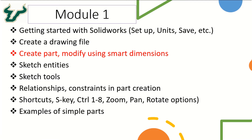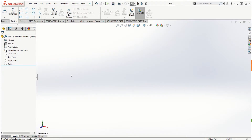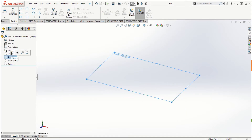In this video we will take a look at how to create a simple part and then modify its dimensions using the smart dimensions option. Let's go ahead and get started with a new part file in SolidWorks. We want to create a part file starting off from the top plane.